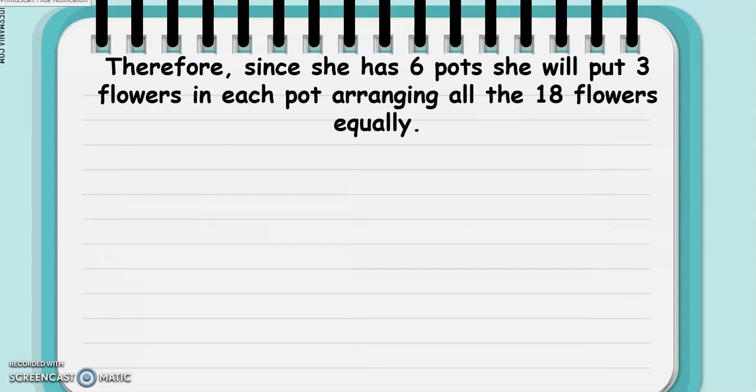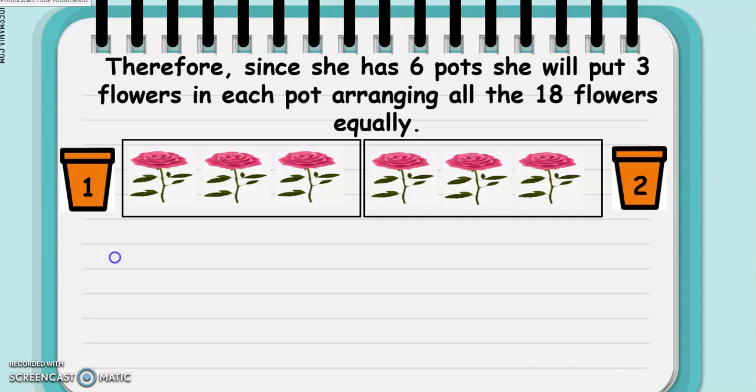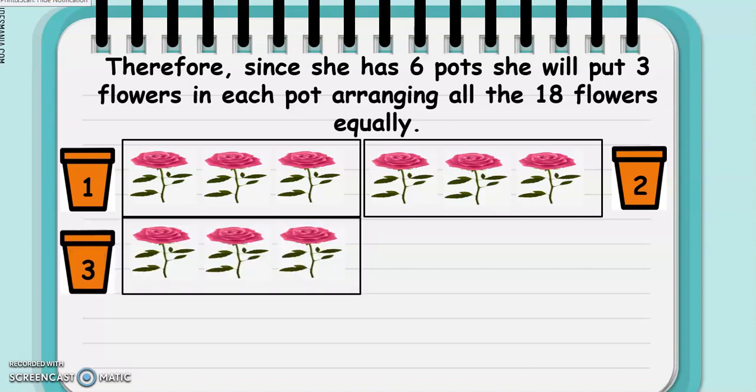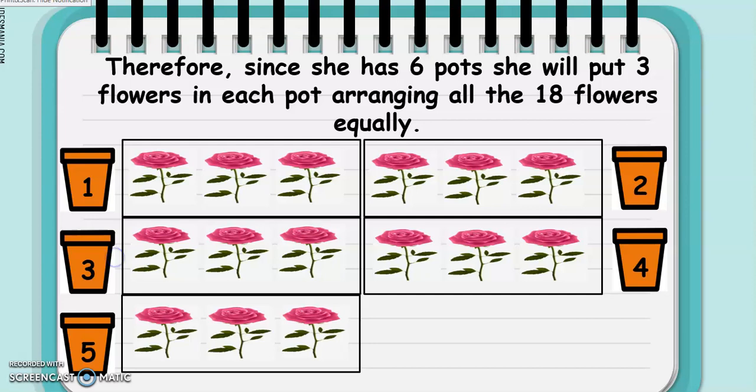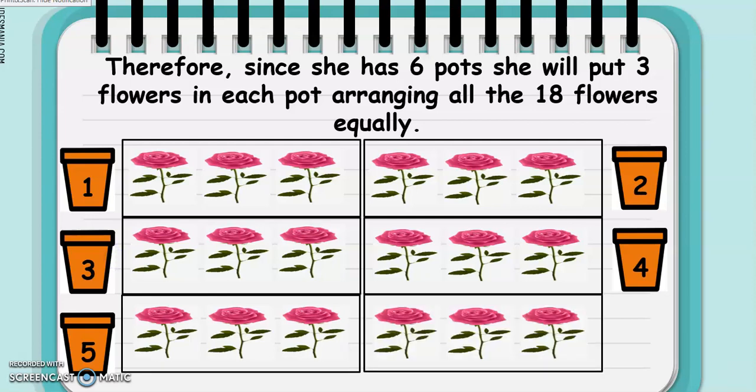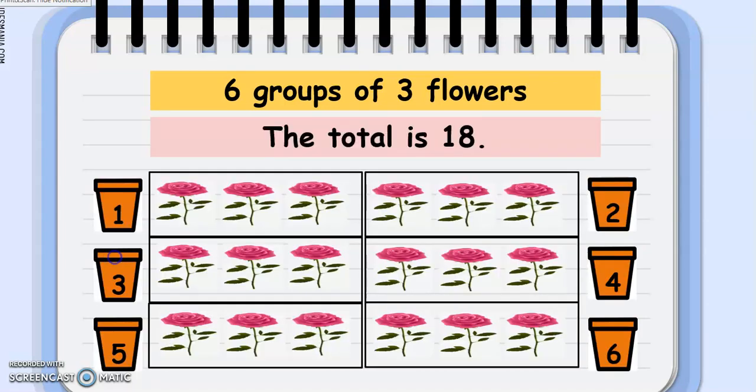Therefore, since she has six pots, she will put three flowers in each pot, arranging all the 18 flowers equally. So, the three flowers will go to the first pot, another three to the second pot, third pot, fourth pot, fifth pot, and of course, another three will go to the sixth pot. Now, we may describe the flowers as six groups of three flowers. And the total is, of course, 18.